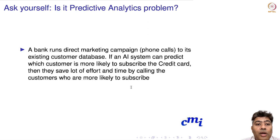Now, one more ask-yourself moment. Is this a predictive analytics problem? A bank runs a direct marketing campaign—phone calls—to its existing customer database. If an AI system can predict which customer is more likely to subscribe to the credit card, then they save a lot of effort and time by calling the customers who are more likely to subscribe. Please pause your video, think about it for a couple of minutes, and identify if it is indeed a predictive analytics problem.